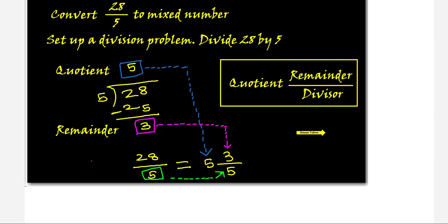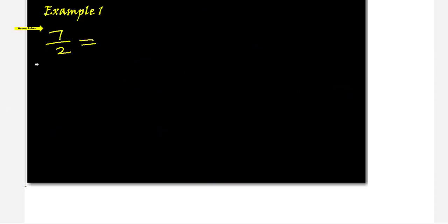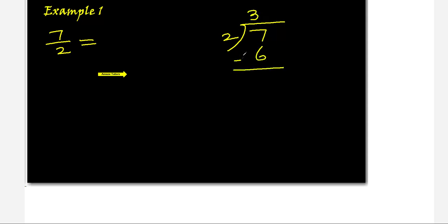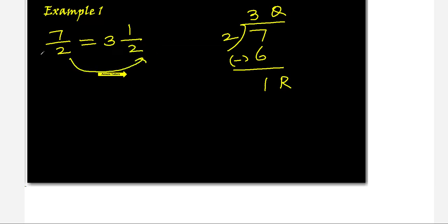Let's do some examples. Example 1: convert the improper fraction 7 over 2 to a mixed number. Do the division — 3 twos are 6, subtract 6 from 7, remainder is 1. Quotient is 3, remainder is 1. Write it in mixed number form: quotient 3 comes as the whole number, remainder 1 on top, same divisor 2 on the bottom — giving 3 and 1 over 2.